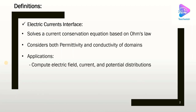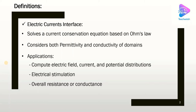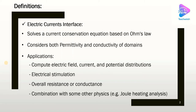Some applications of the Electric Currents interface include finding the electric field, electric current, and potential distributions in different domains. We can use it for studying electrical stimulation, especially for biomedical applications — I will solve one such example in the future. We can also find the overall resistance or conductance of a domain, and combine this interface with other physics, for example to study Joule heating problems.